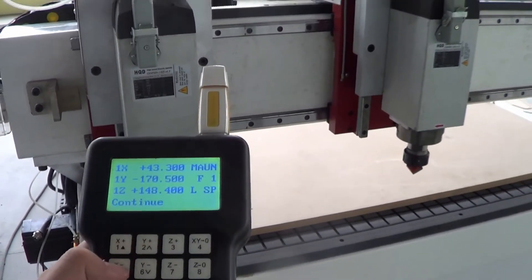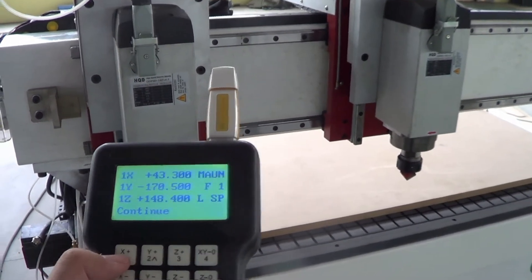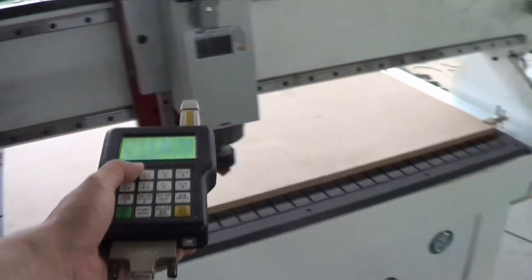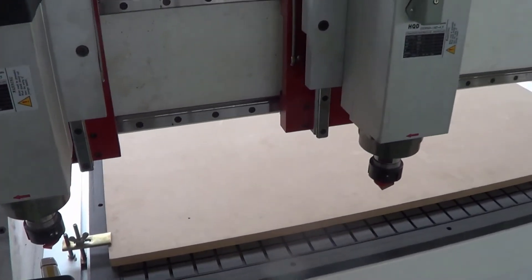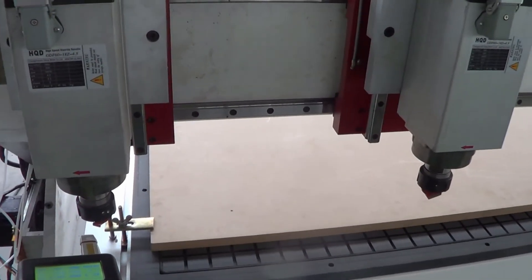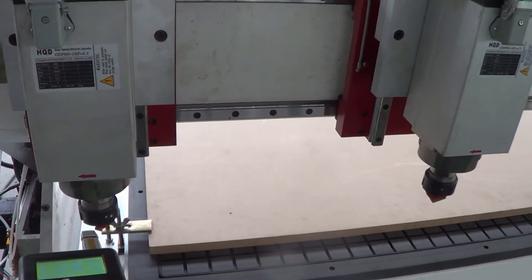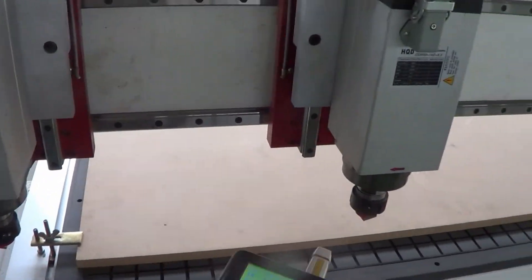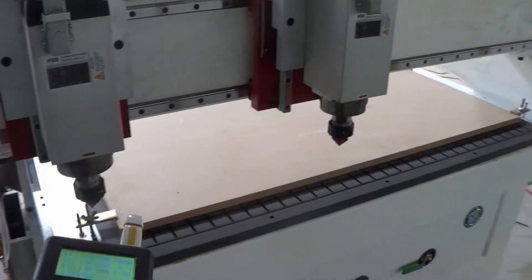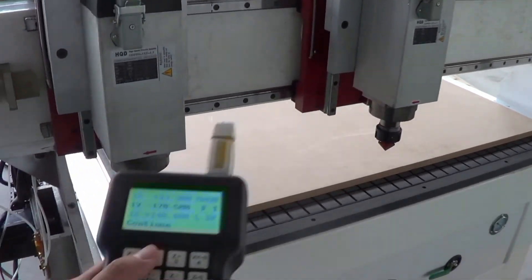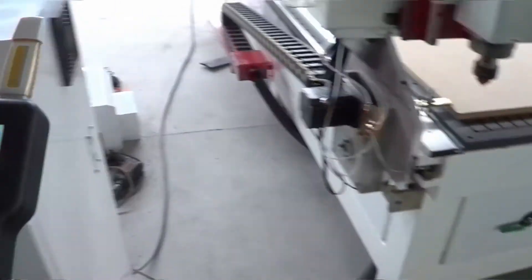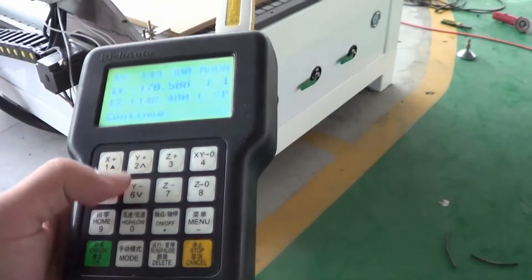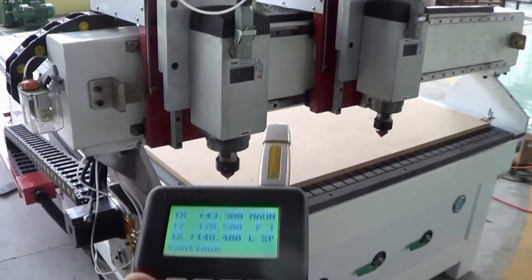I can use the X plus and X minus button to move the spindle 2, and I can use the ruler to measure the distance between these two engraving points. Once I've made it exactly what I want, then I can enable spindle 1, and I can move them together.